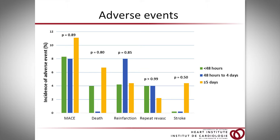When we looked at adverse events, we defined our primary endpoint as the incidence of major adverse cardiovascular events — a composite of death, re-infarction, repeat revascularization, and stroke. There is no significant difference in the incidence of MACE between the different ticagrelor timing discontinuation strata. However, we do note interesting numerical differences: for patients who underwent CABG five days or more after ticagrelor discontinuation, MACE was 11% compared to 8% in the 48 hours to four days cohort, driven mostly by an increase in death and stroke.